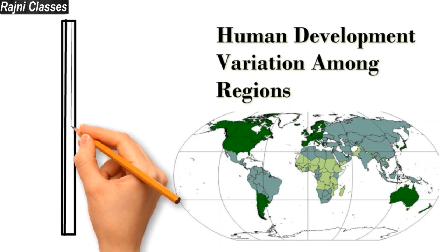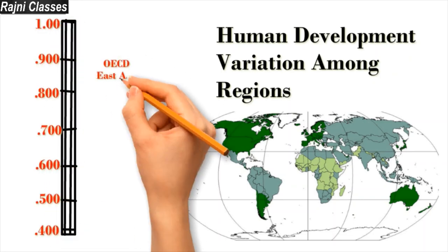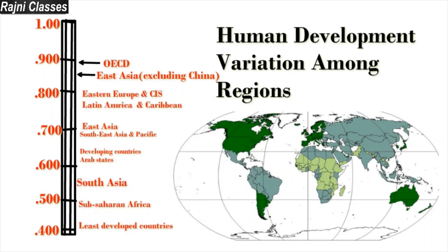Looking at human development variation among regions: countries scoring around 0.4 are the least developed. Around 0.5 are sub-Saharan African countries like Mali and Chad. Around 0.6 are developing countries. Around 0.7 is East Asia and Pacific. Around 0.8 is Eastern Europe and CIS, and Latin America and Caribbean countries. Around 0.9, the highest rank, are OECD countries and East Asia excluding China.